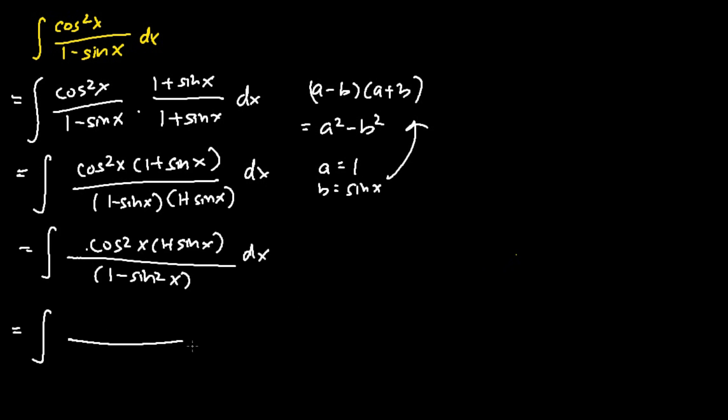The next step, in the denominator, we will apply the trigonometry identity that cosine squared x equals 1 minus sine squared x. Hence, the denominator will just be cosine squared x. In the numerator, it will be cosine squared x plus cosine squared x sine x, so I expand it out.